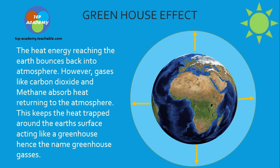The greenhouse effect: heat energy reaching the earth bounces back into the atmosphere, and gases like carbon dioxide and methane absorb that returning heat. This keeps the heat trapped around the earth's surface, acting like a greenhouse — hence the name greenhouse gases. The heat from the sun hits the earth's surface and, in its effort to return to space, bounces off that envelope of carbon dioxide and methane, increasing the temperature of the earth.